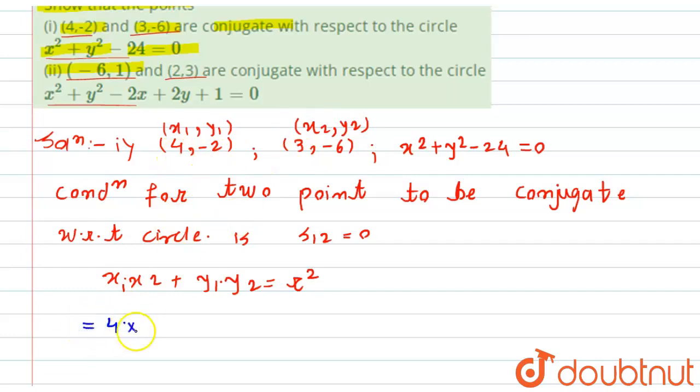That is 4 into 3. This will become 4 into 3 plus y₁ is -2 into y₂ is -6 and minus of 24. This r² will come to this and become minus of this.